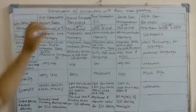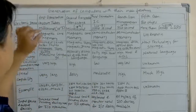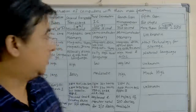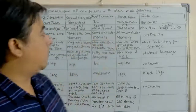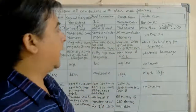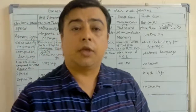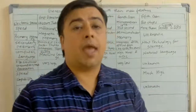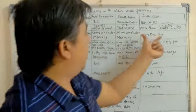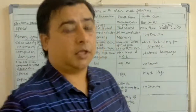For primary memory: magnetic core memory was used in the first generation. In the second generation, magnetic core memory was also used, same as the first generation. In the third generation, semiconductor memory was used — RAM and ROM. In the fourth generation, semiconductor memory is used as primary memory, including RAM, ROM, and cache memory. In the fifth generation, it is unknown what will be used as primary memory.